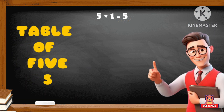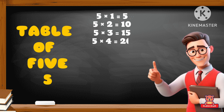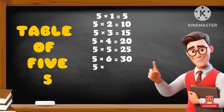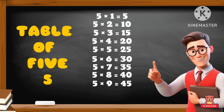Five one's a five, five two's a ten, five three's a fifteen, five four's a twenty, five five's a twenty-five, five six's a thirty, five seven's a thirty-five, five eight's a forty, five nine's a forty-five, five ten's a fifty. Yay!